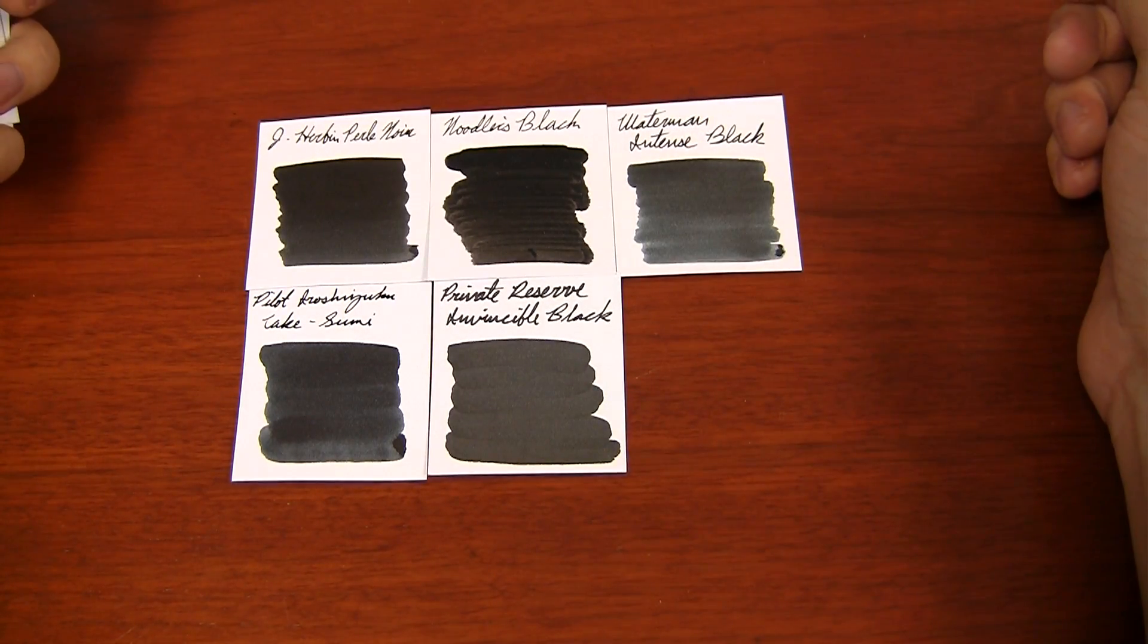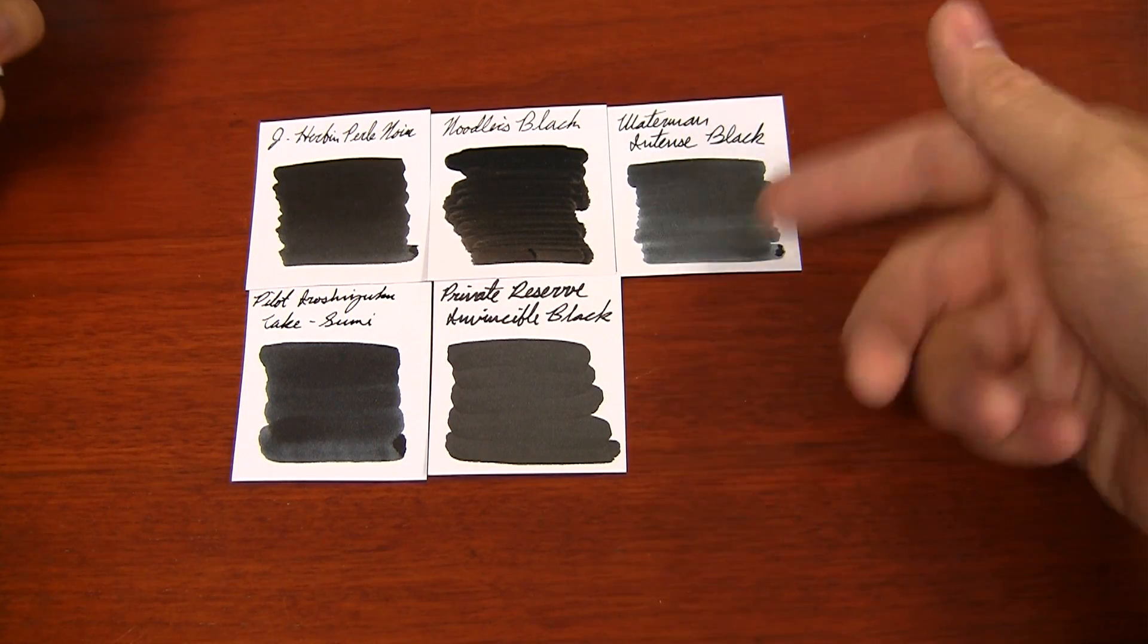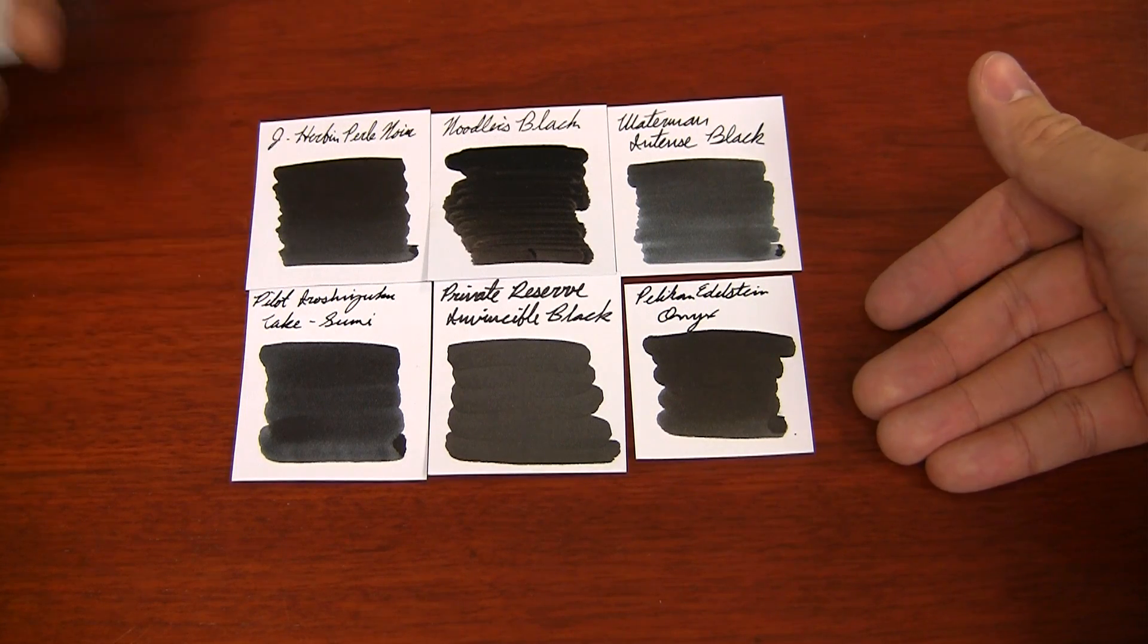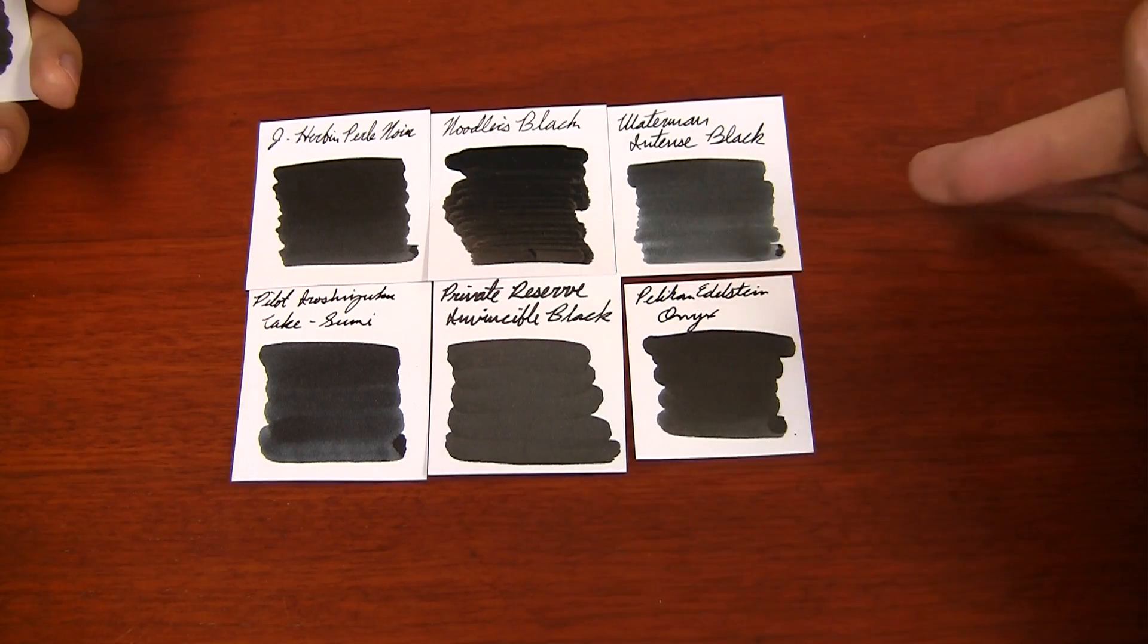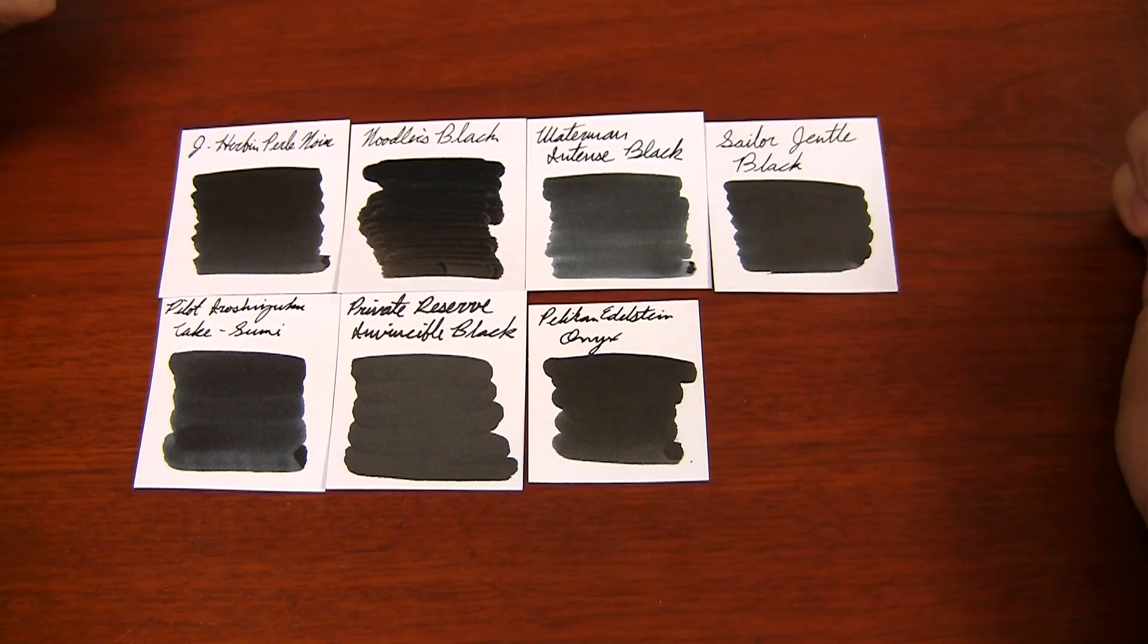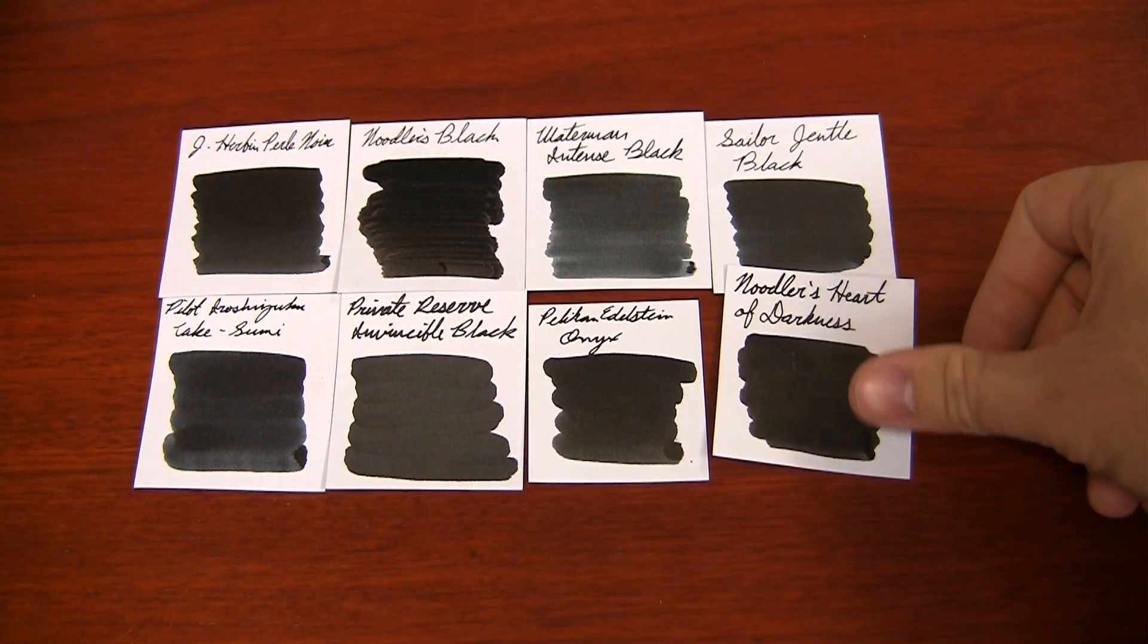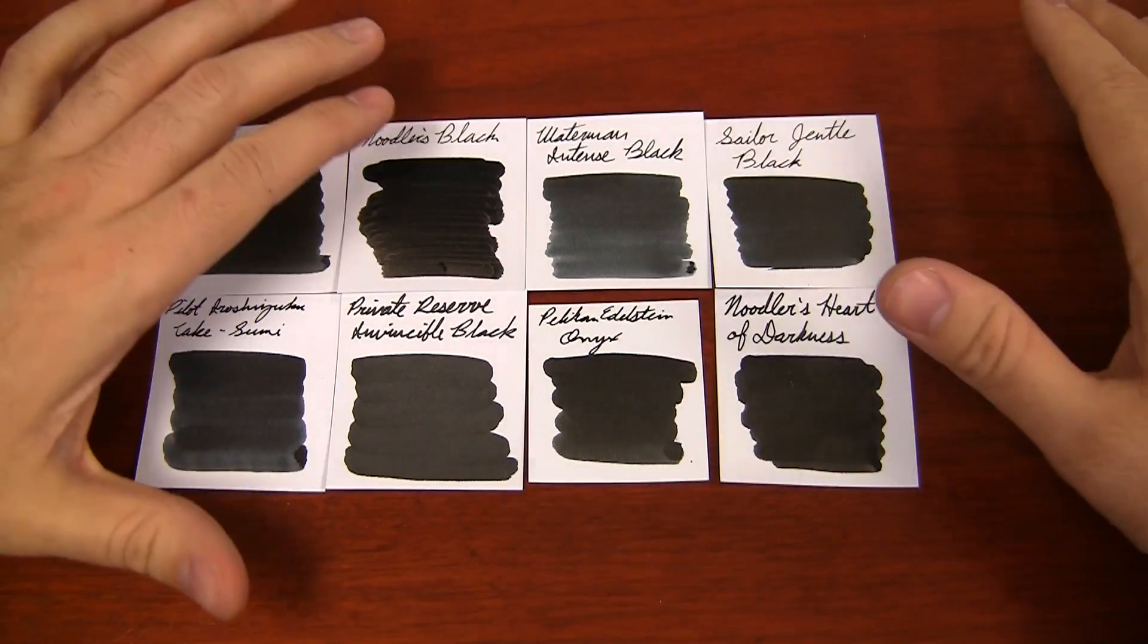Waterman Intense Black really doesn't look very intense compared to most of these other blacks. But it's there. It's not as dark as Takesumi. Still flows well though. Pelikan Edelstein Onyx. This is actually a pretty decent black. It is expensive, kind of like the Iroshizuku. But it's a pretty dark black. A little darker than Takesumi. That's not a bad black actually. I'm kind of a fan of that one. Sailor Gentle Black is another one. That one's not too far off from Takesumi. It's a little bit darker there. And then last one is Noodler's Heart of Darkness. That's another really dark one. So you can see the Takesumi really kind of falls in the middle there.